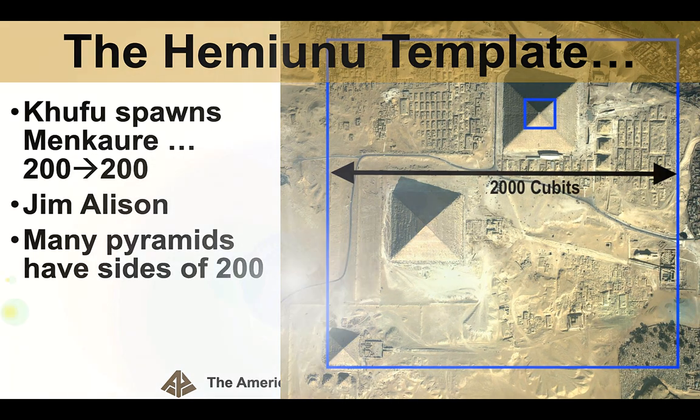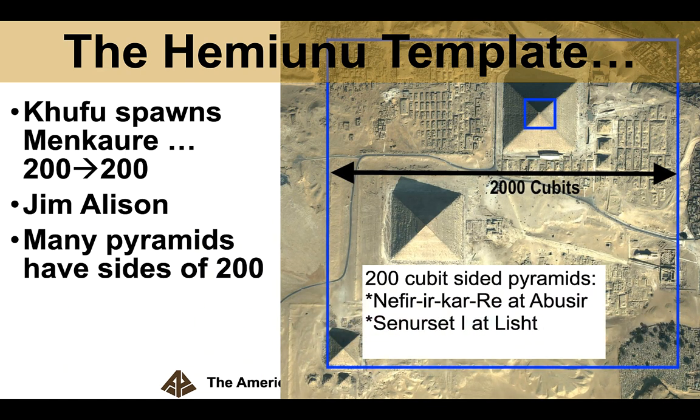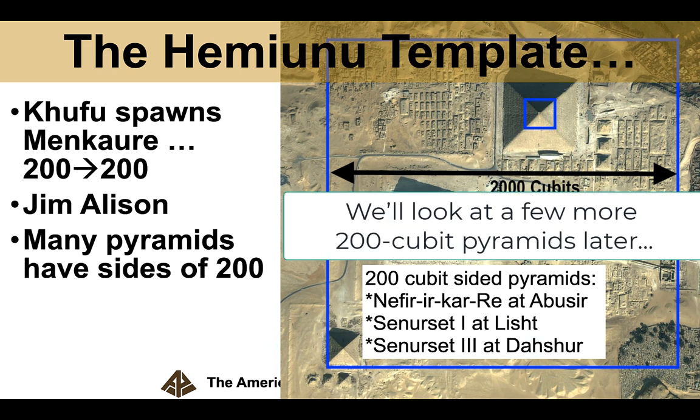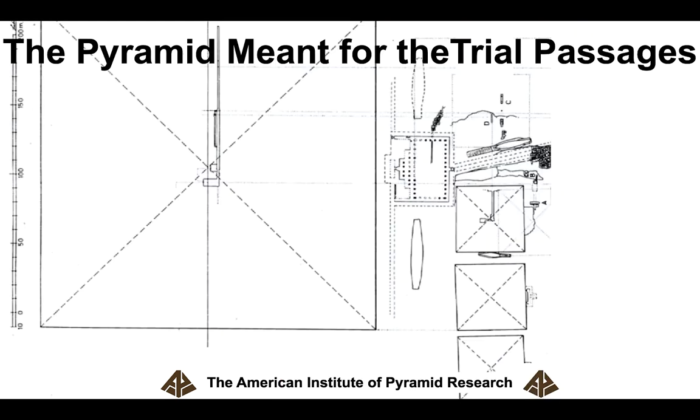There's many pyramids that have sides of 200. For instance, Neferkare in Abusir, Senusret the first at Lisht, Senusret the third at Dahshur. So again, this seems to be a template that Hemiunu's showing us here. So, I'm going to officially call it the Hemiunu Template from now on.